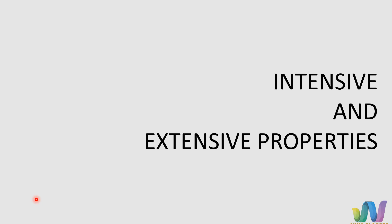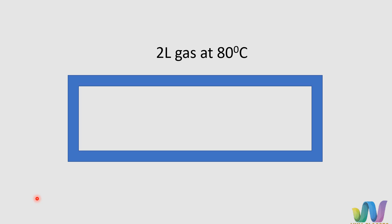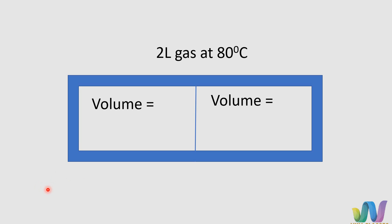Intensive and extensive properties. Consider a gas enclosed in a 2-litre vessel at 80 degrees Celsius. The vessel is partitioned into equal halves. What will be the volume of the gas in each compartment? It will be 1 litre each.